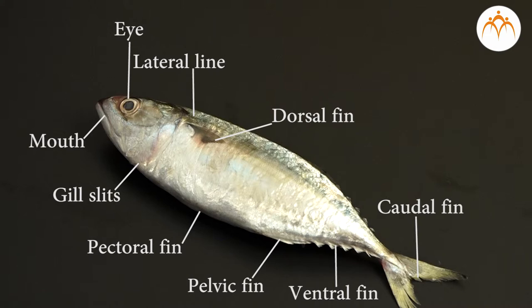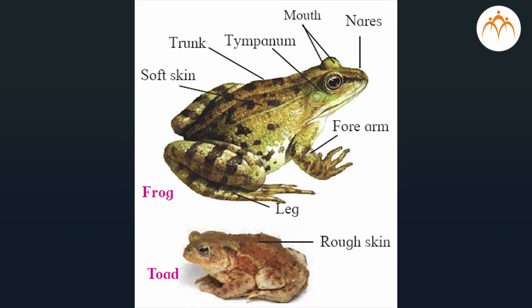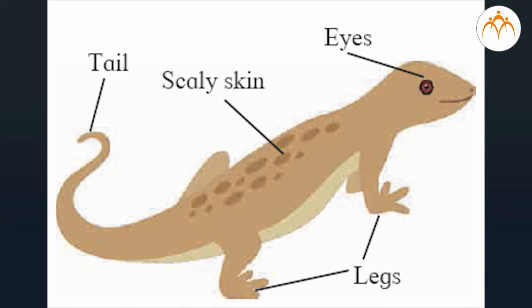Class Amphibia: these animals are strictly aquatic during larval life and perform only aquatic respiration, whereas they can live in water as well as on land during adult life and can perform aquatic as well as aerial respiration. They have two pairs of appendages; digits are without claws. Exoskeleton is absent; skin is without any derivatives and usually kept moist for respiration. External ear is absent but tympanum is present; neck is absent; eyes are prominent with eyelids. Examples: frog, toad, salamander, etc.